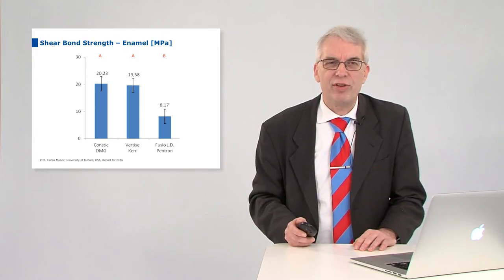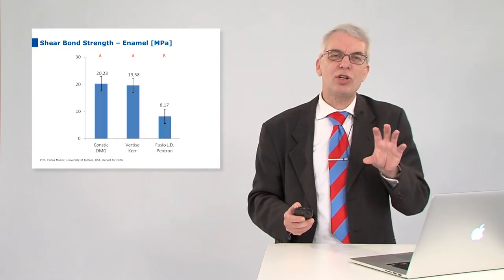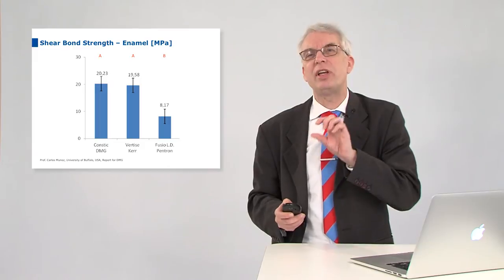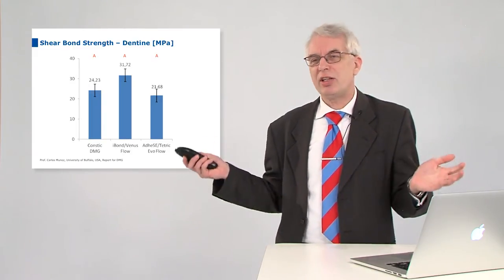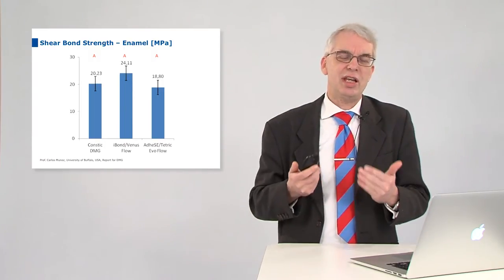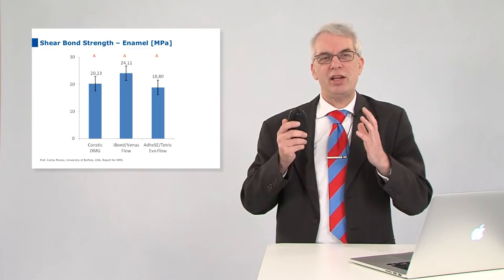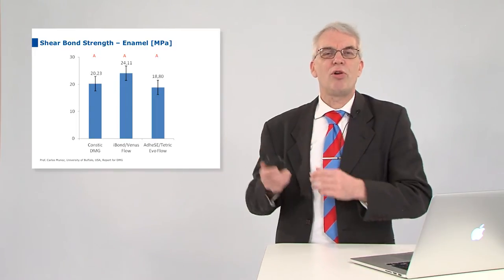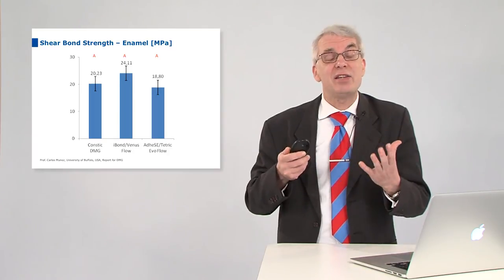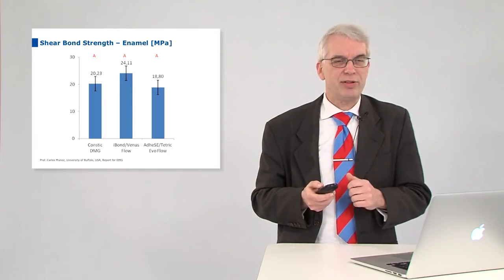But now comes the important and very intriguing part. And this time we are not comparing against the competition—we are comparing how does CONSTIC perform in comparison with a regular flowable that is used with a bonding agent. So these are the results. And we can see in dentin CONSTIC and IBOND and ADHESE with TETRICFLOW, they're all the same. Even though they look slightly different, statistically these are the same. We have the same picture when we go into enamel. And that is really the surprising thing—that we can perform a very high bond strength with CONSTIC on enamel and on dentin that is better than the competition of other self-adhesive restoratives. And it performs at the same level as a bonded flowable in a regular bonding procedure. So this is very intriguing and astonishing.